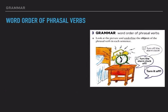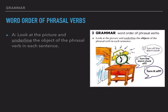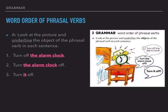Word order of phrasal verbs, letter A. Look at the picture and underline the object of the phrasal verb in each sentence. Number one: turn off the alarm clock. The object of the phrasal verb is the alarm clock. Sentence two: turn the alarm clock off — again, the alarm clock. Number three: turn it off. The object is 'it'. So in sentences one and two the object is the alarm clock, and in sentence three the object is 'it'.